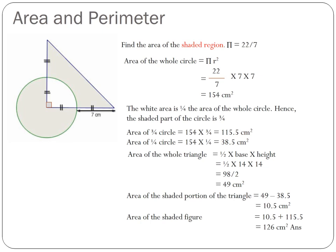Area of the shaded figure will be equal to 10.5 plus 115.5, and this is three quarter the circle. So our final answer is 126 square centimeters.